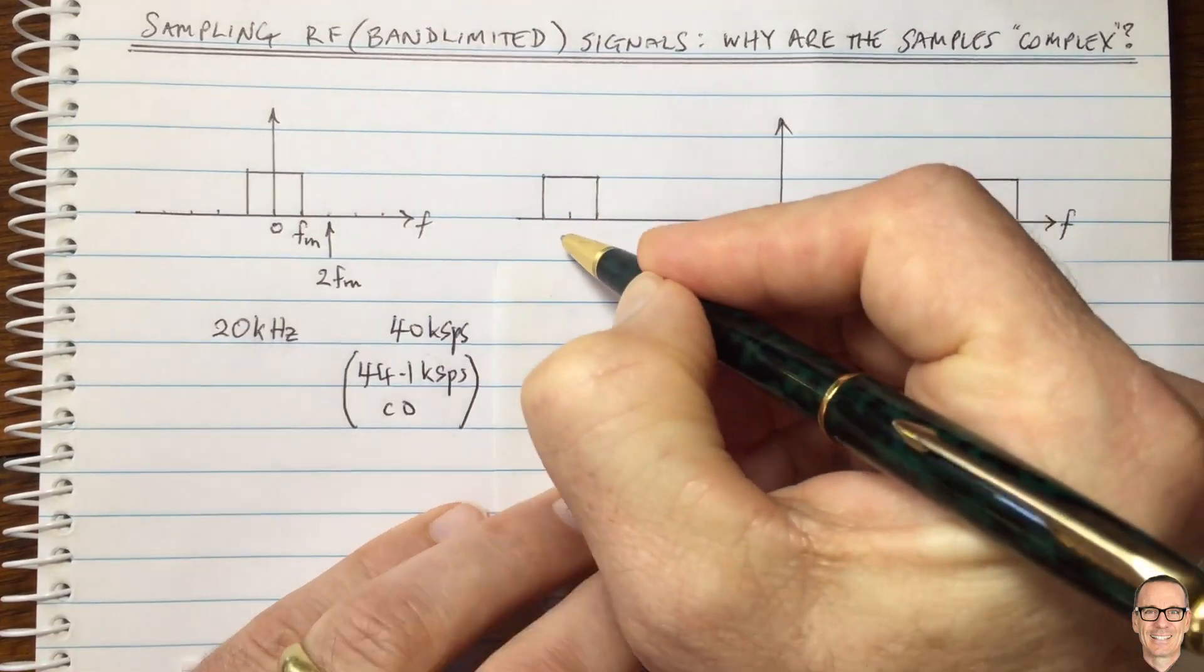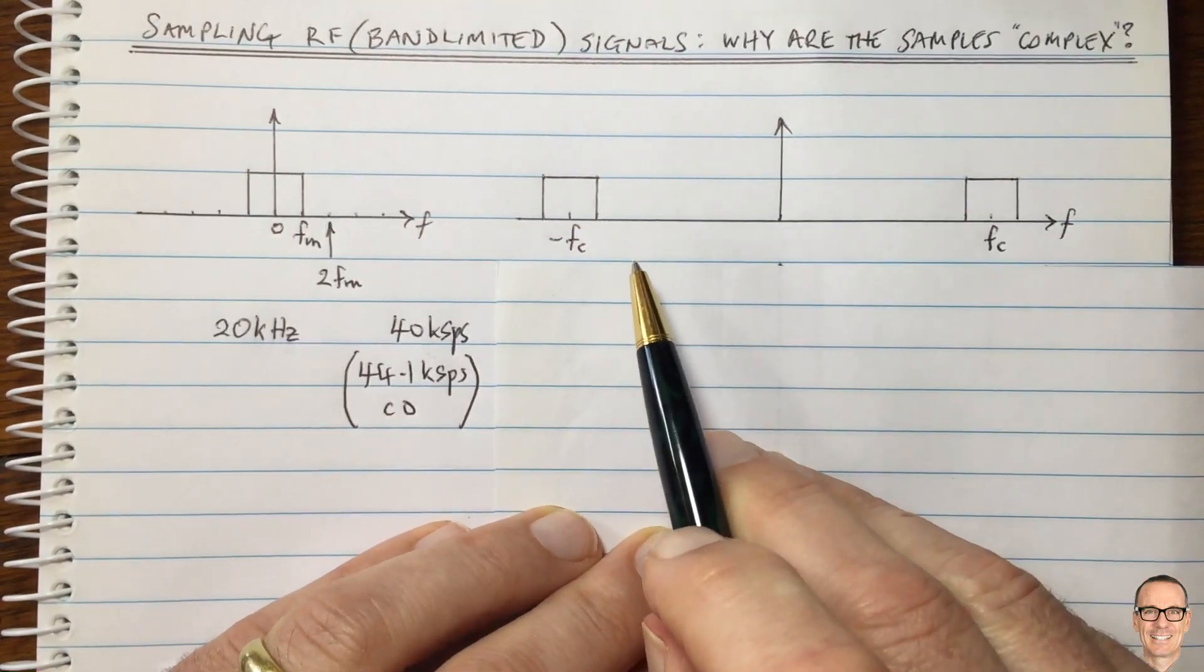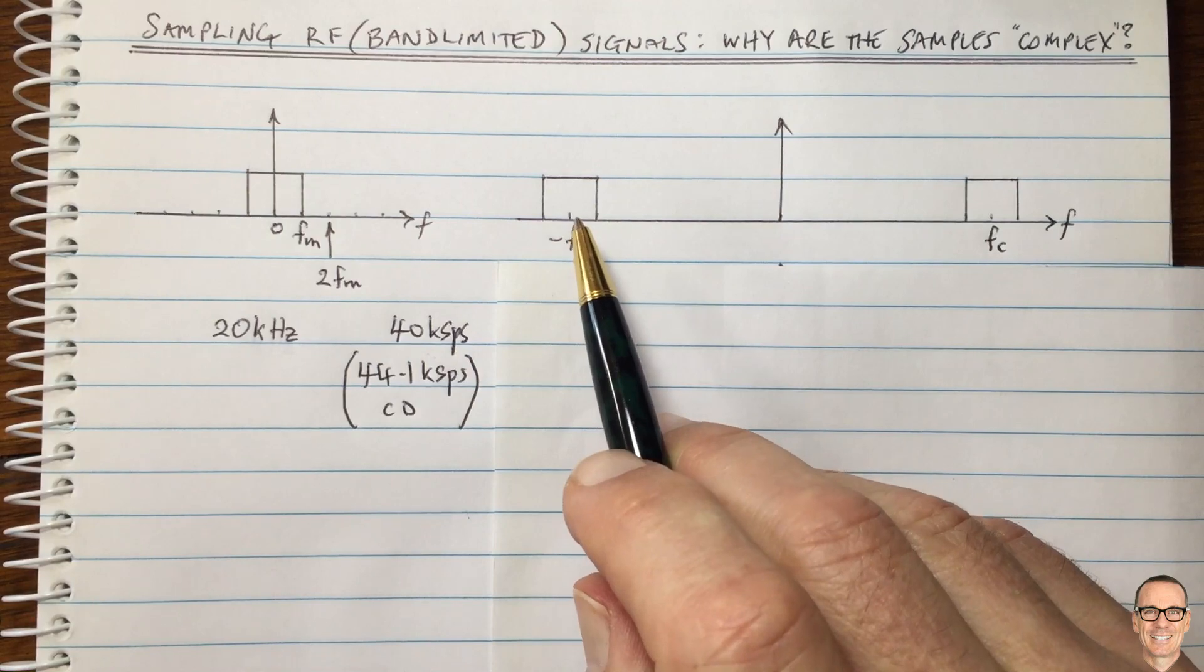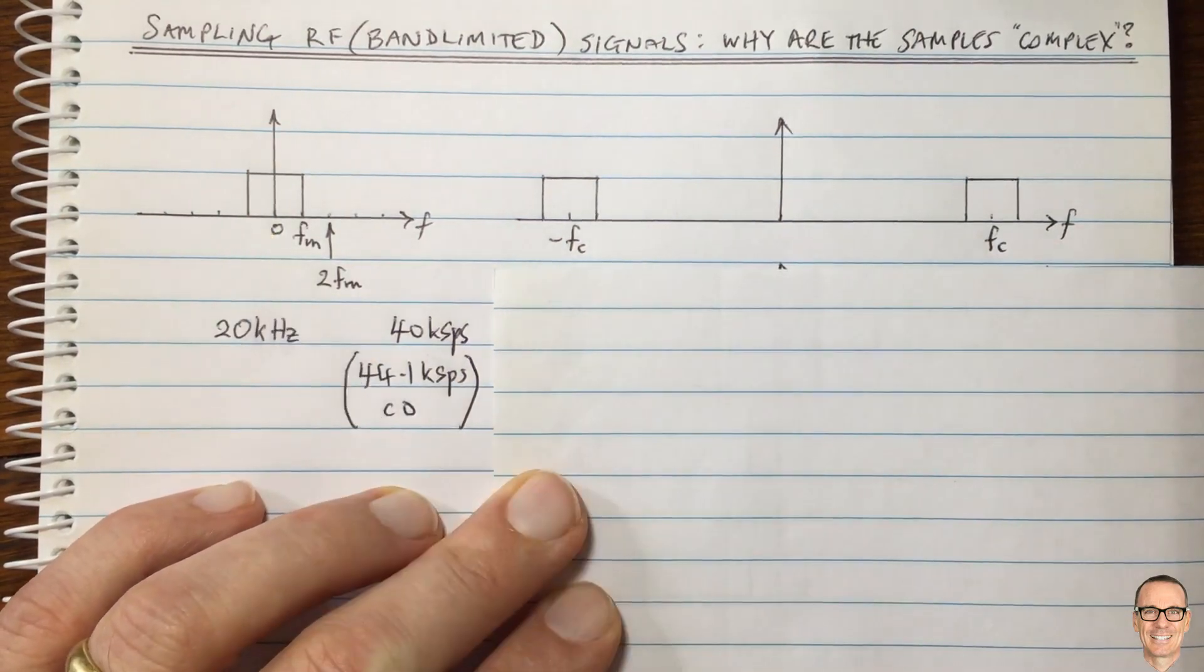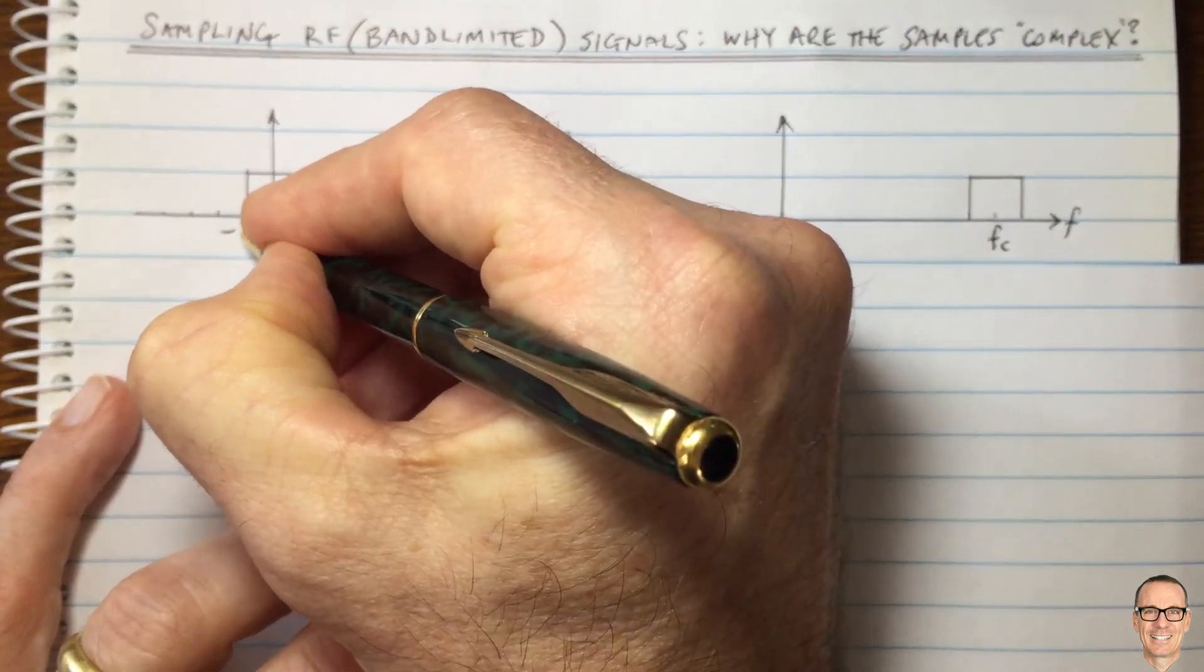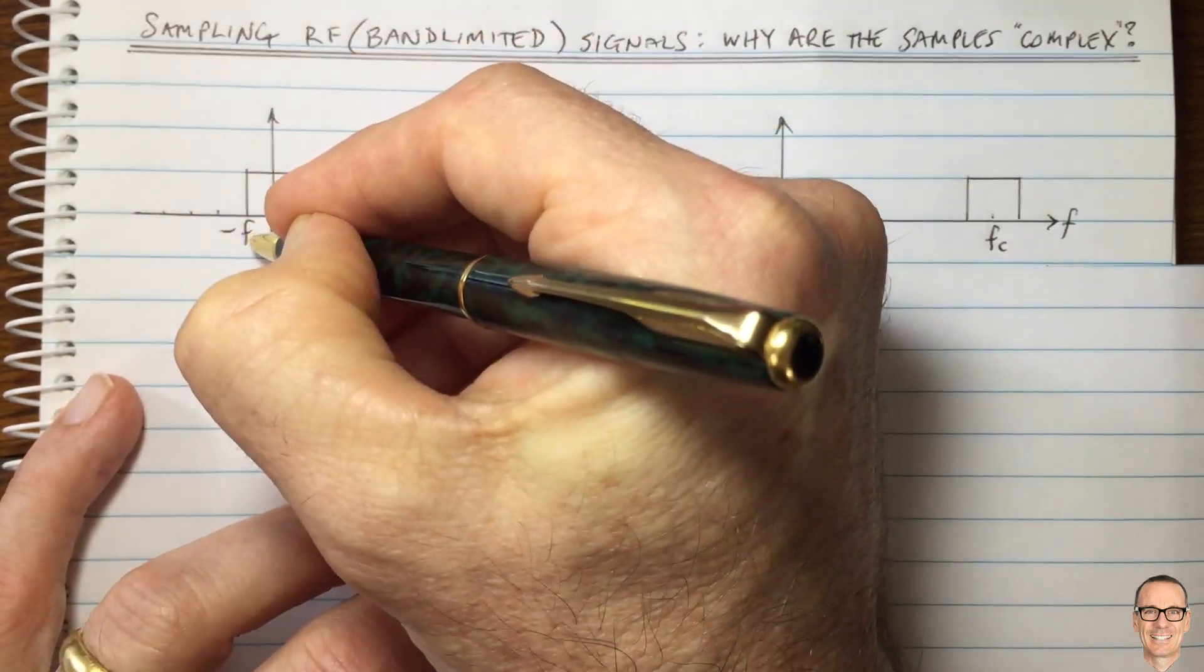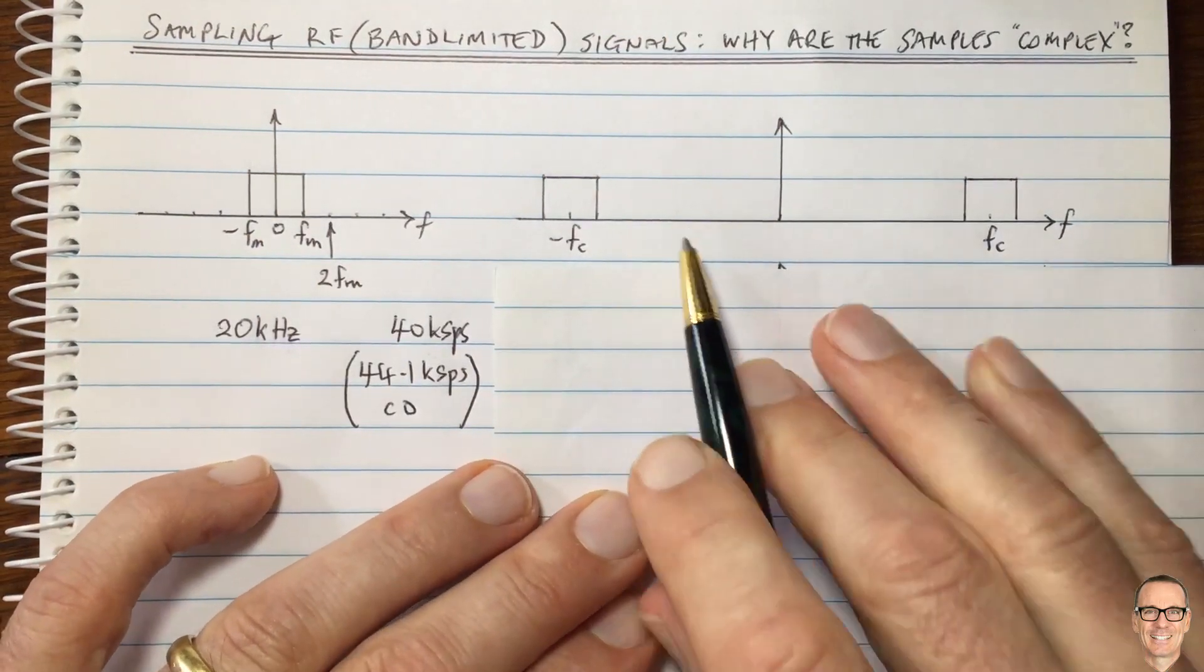Now we've got other videos on the channel which explain amplitude modulation, and you can find those in the description below. Also, we've got a video that explains what negative frequency is, because you've seen here that I've drawn positive and negative frequency. So there's a video on the channel that explains negative frequency. Again, look for it in the description below.